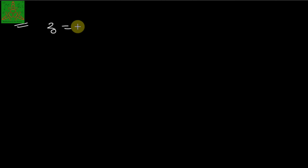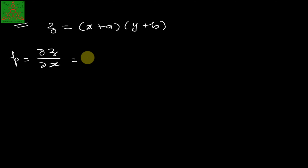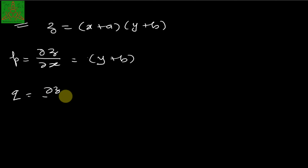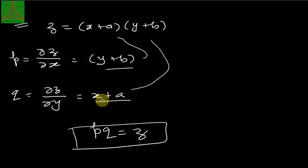Let us solve one more example: z = (x + a)(y + b), where a and b are arbitrary constants. We have to find the differential equation satisfying this surface. Differentiating: p = ∂z/∂x = (y + b), since the derivative of (x + a) is 1 and (y + b) is constant with respect to x. And q = ∂z/∂y = (x + a). Substituting, we get pq = z as the required partial differential equation.